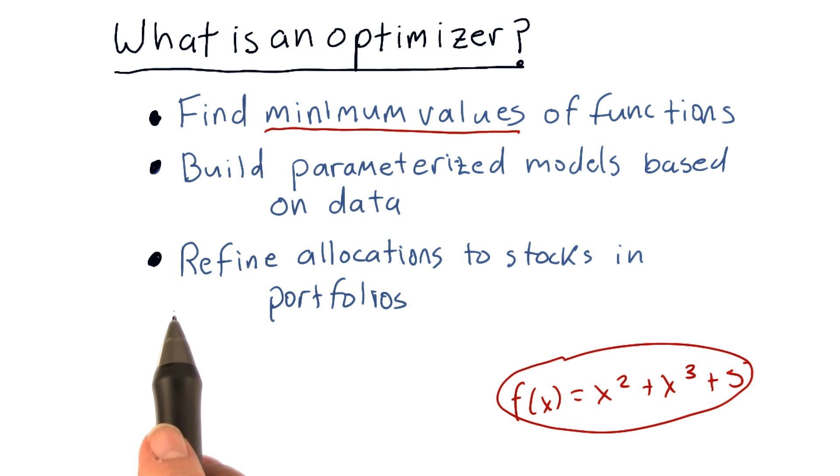Finally, we can use an optimizer to refine allocations to stocks in portfolios. What does that mean? For instance, you can decide what percentage of funds should be allocated to each stock using an optimizer.